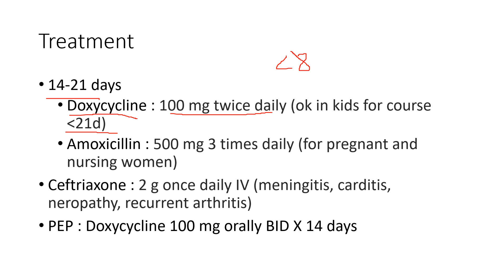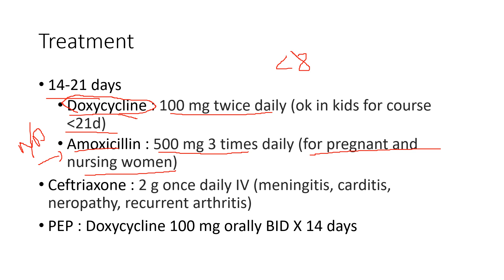Amoxicillin 500 milligrams three times daily is the second treatment option, mainly used for women who are pregnant or nursing because of doxycycline's effects on mineral absorption and bone development. If you are nursing or pregnant, amoxicillin is the go-to drug — do not use doxycycline. For very young children, amoxicillin will also likely be the preferred choice.